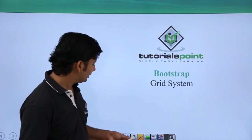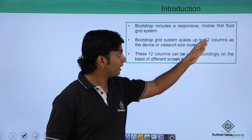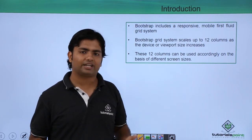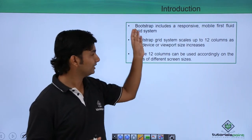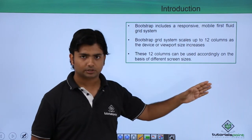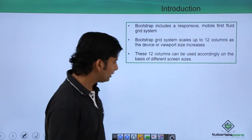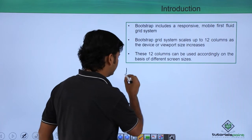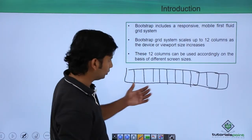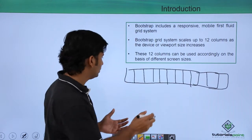Bootstrap includes a responsive, mobile-first fluid grid system. This grid system is what makes responsive web design possible. Bootstrap's grid system scales up to 12 columns as the device and viewport size increases. The basic concept is that we have twelve columns to work with.